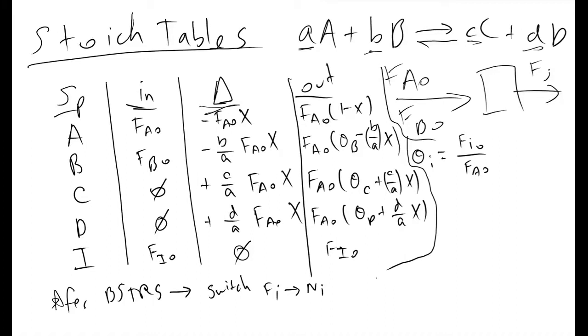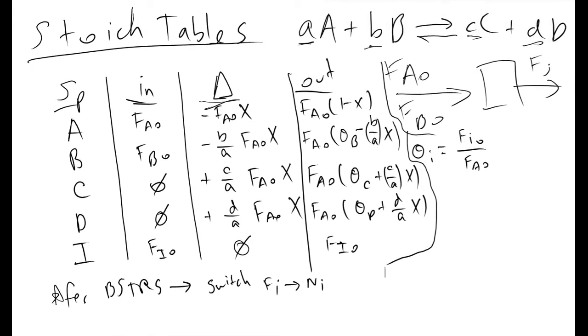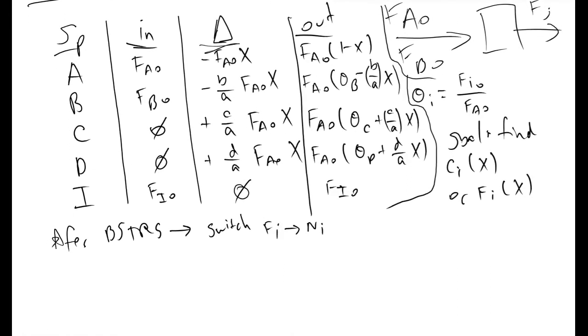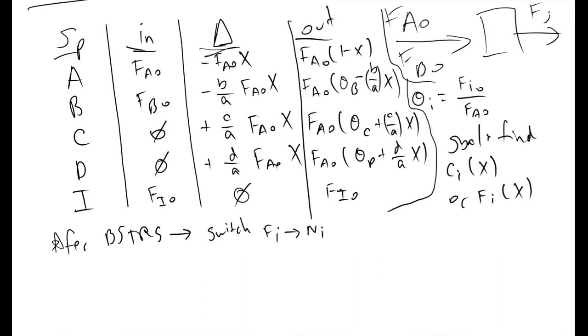At this point, what we usually do, because one of the main goals with stoic tables is to get our species in terms of conversions defined. The goal is typically to find C sub i as a function of x or F sub i as some function of x. We can do this pretty easily with the information that we are given in a stoic table.